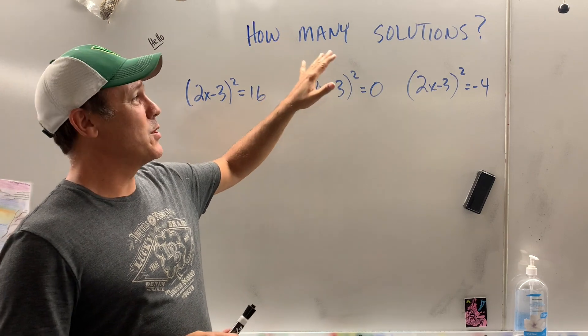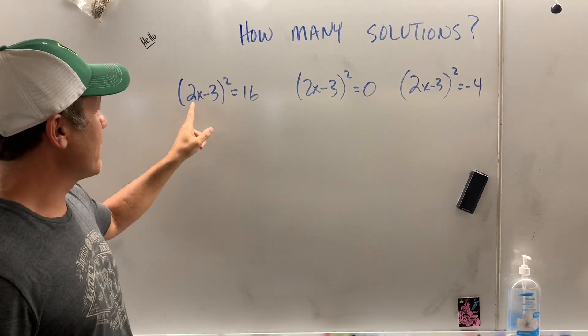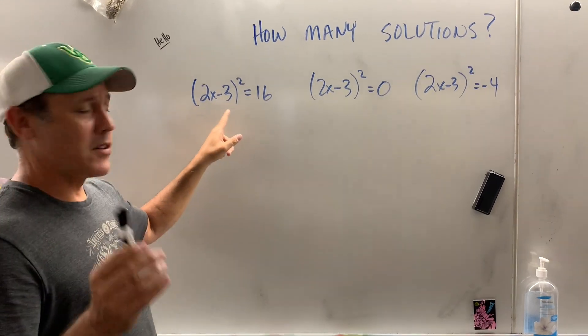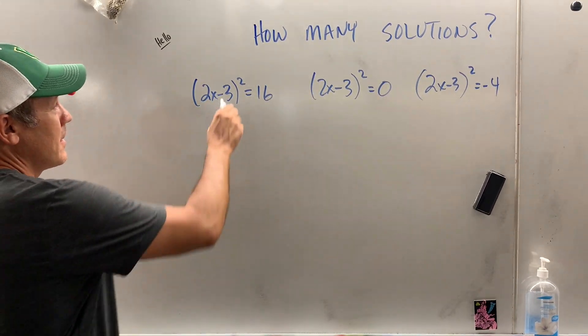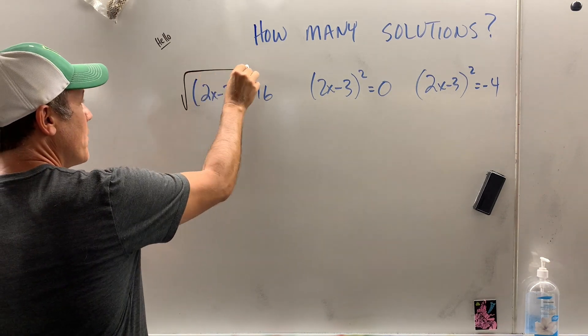I want to teach you how to figure out how many solutions are possible. If we use the square root method, I don't know if you ever learned that, we can get rid of the squared. How do you get rid of a squared?